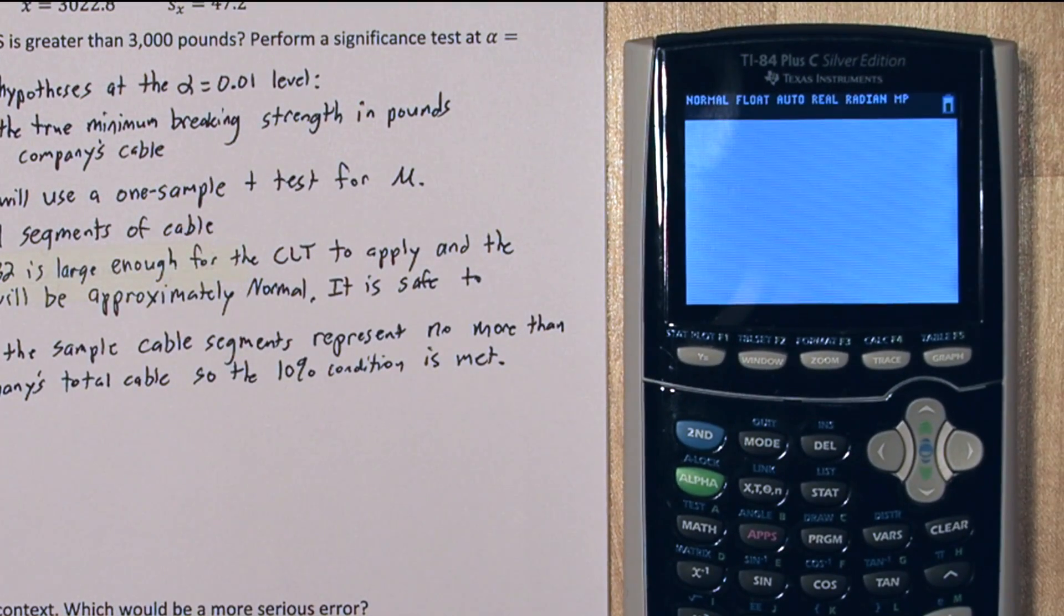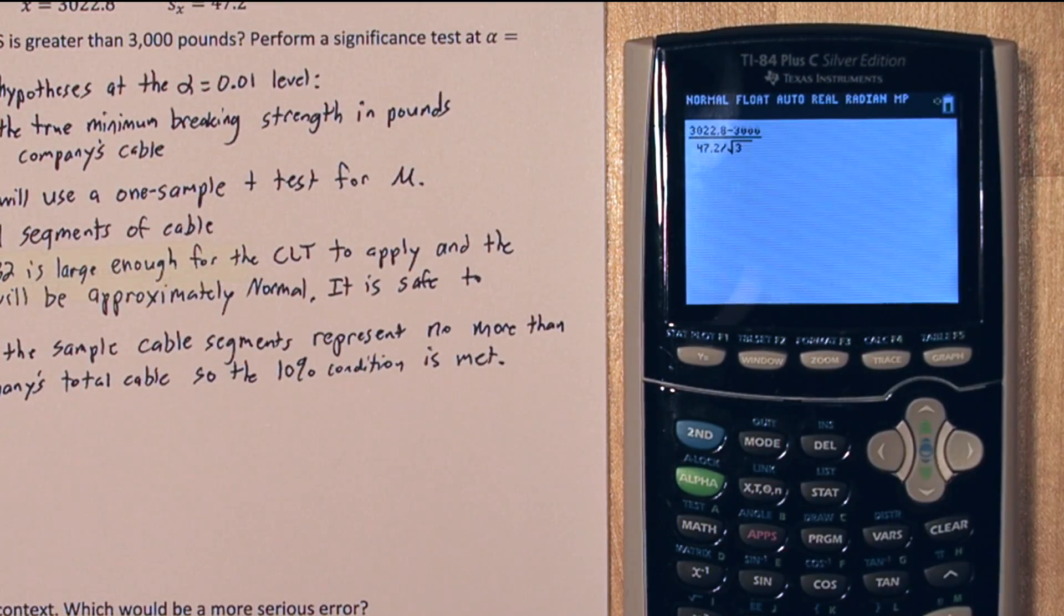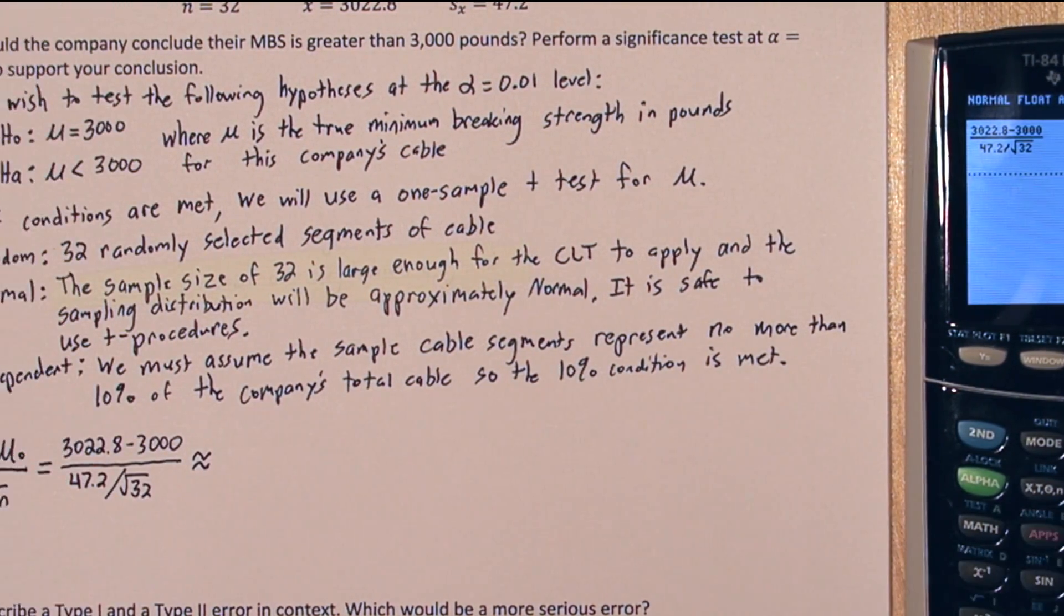A good trick on the calculator is to press alpha and y equals. That allows you to input fractions. So we get a test statistic of 2.73.